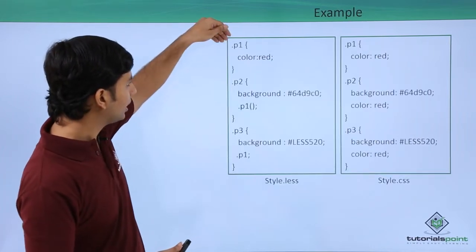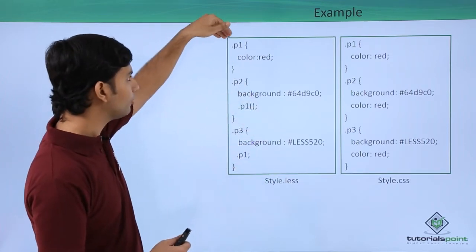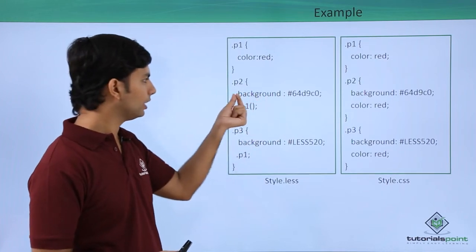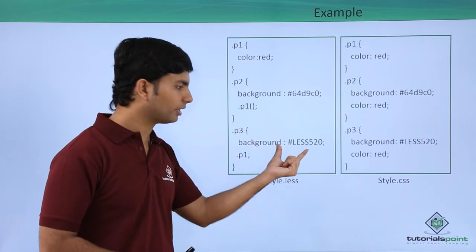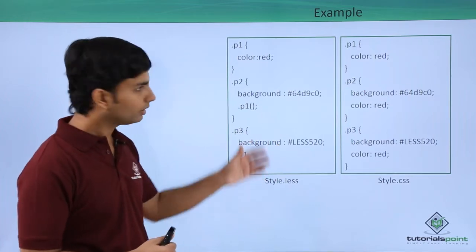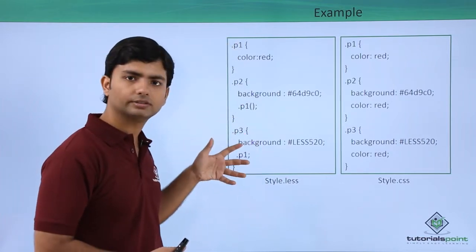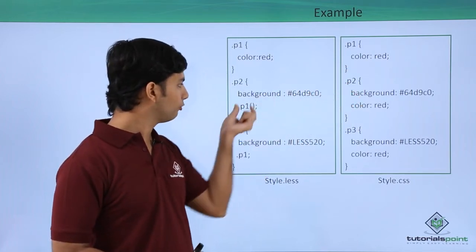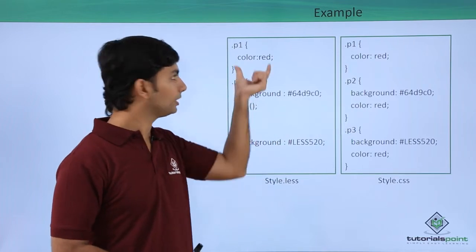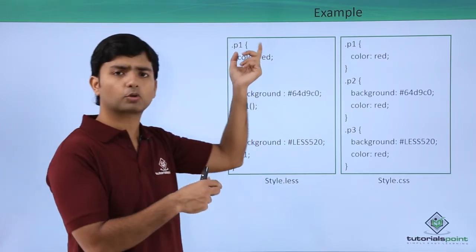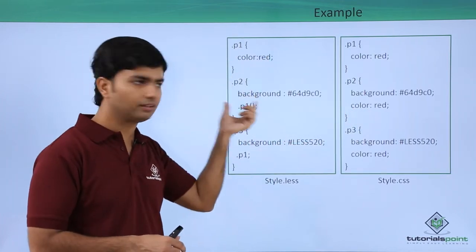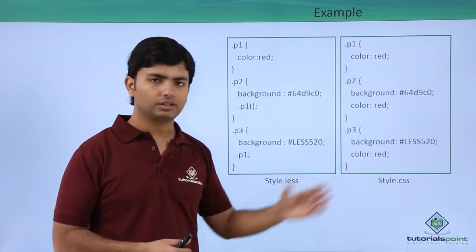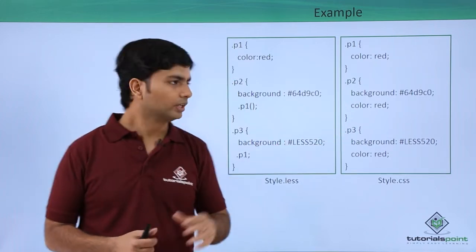Here we have an example. In this LESS file — style.less — I have created p1 with the color red. In p2, I want that font color red as well, so along with the background I will call p1. In p3, along with a different background, I will call p1 again. These are the mixins — you are mixing the style of one class into another. p1 will remain the same, but in p2 and p3, where you called p1, it is replaced by p1's code.